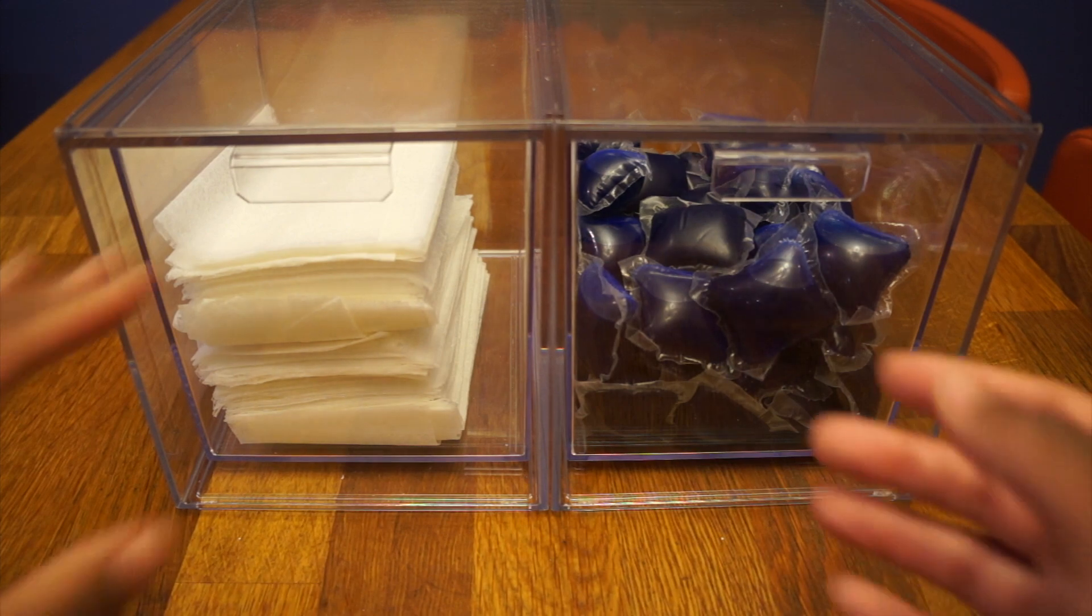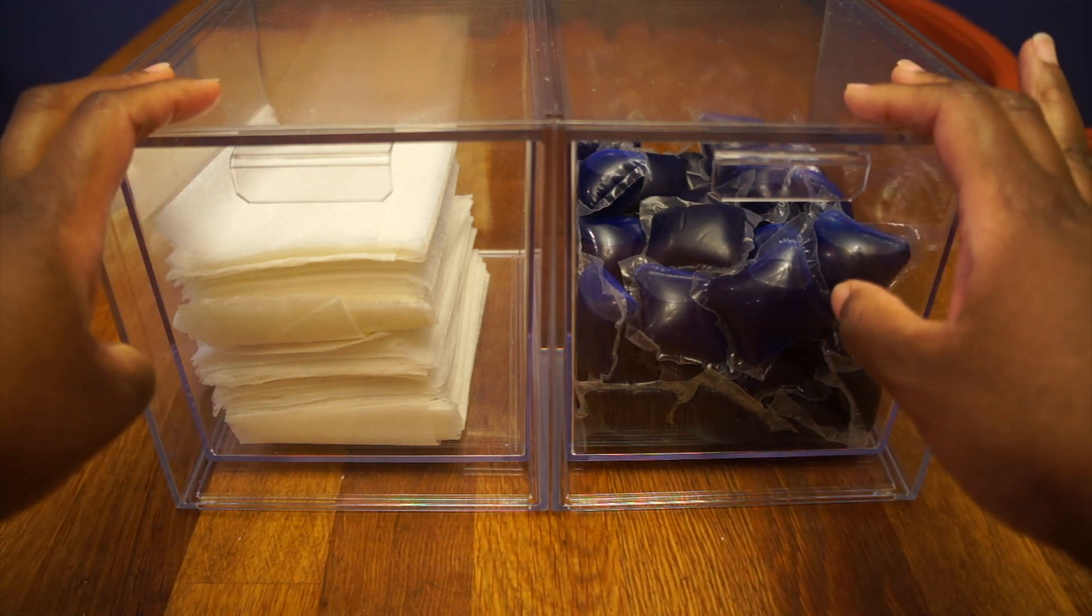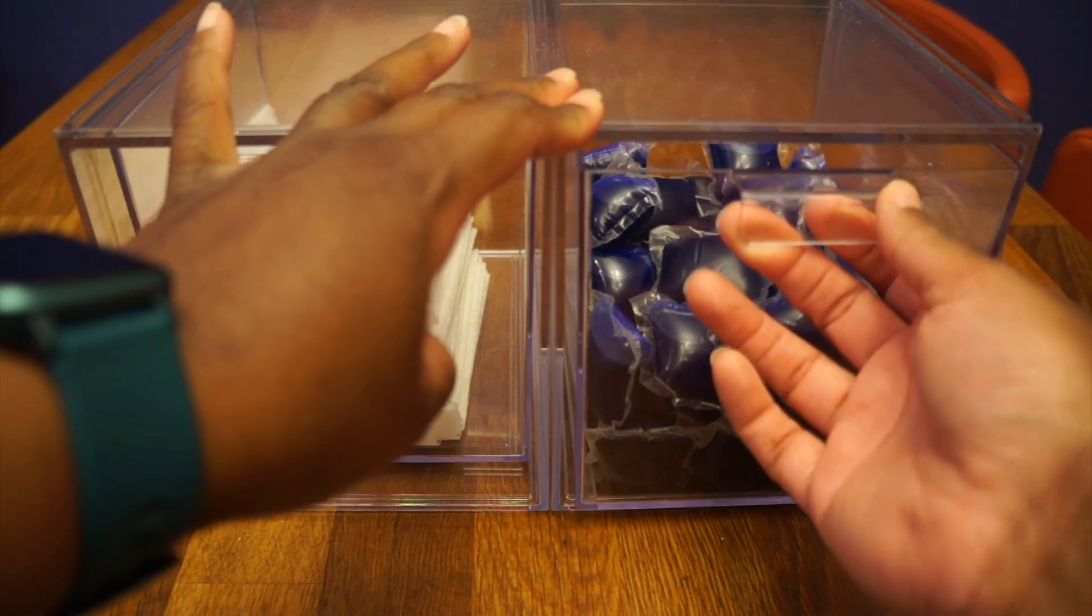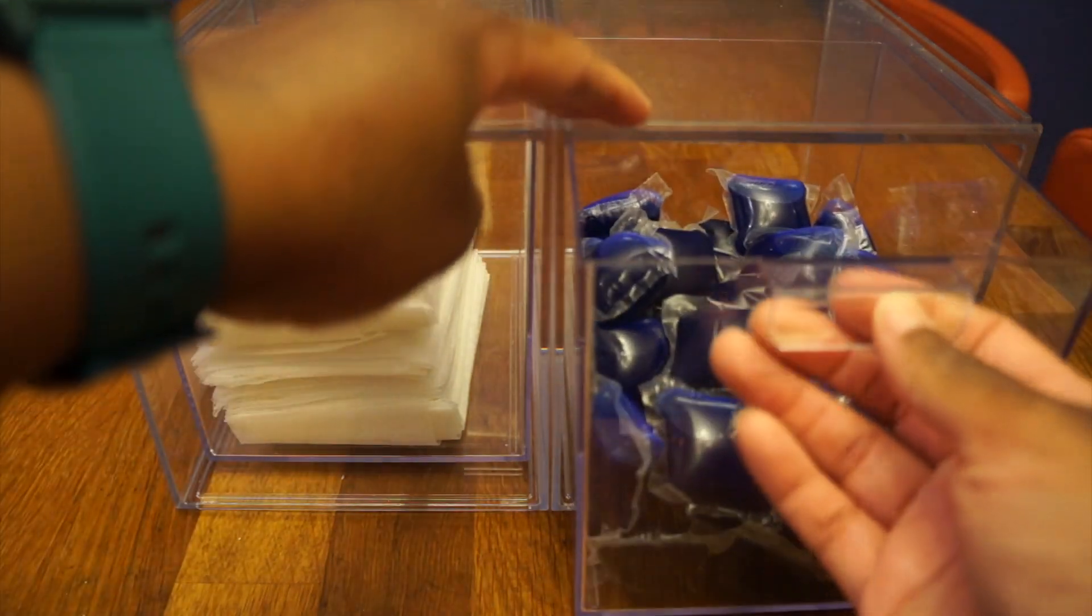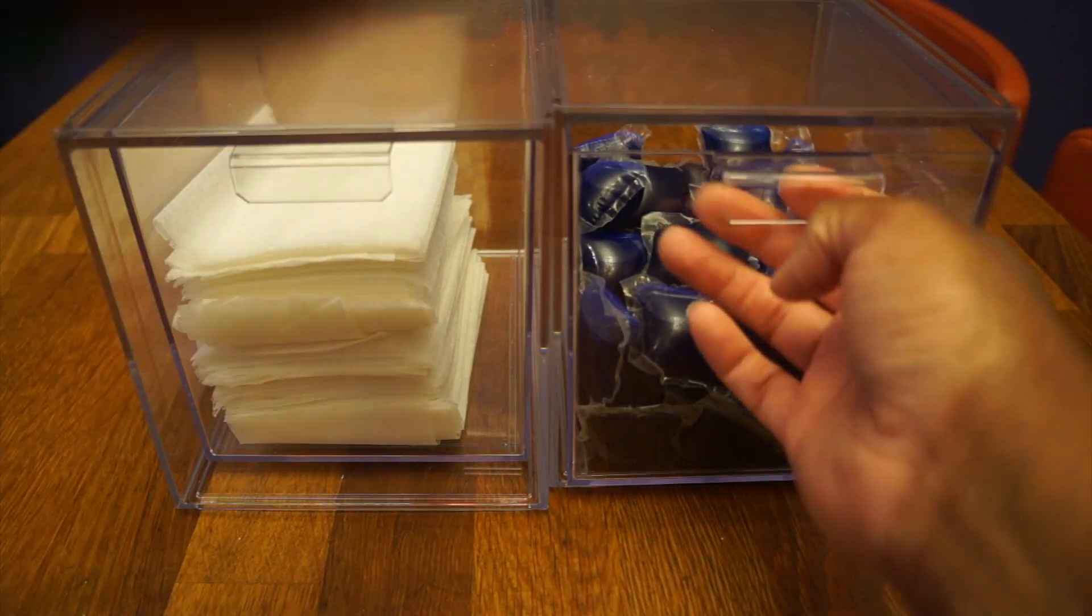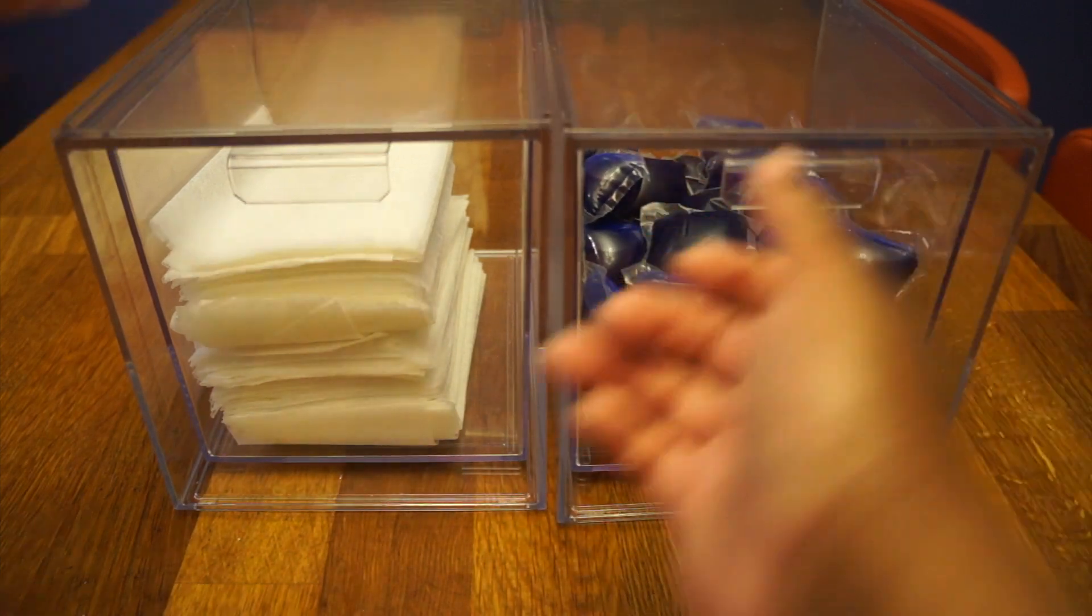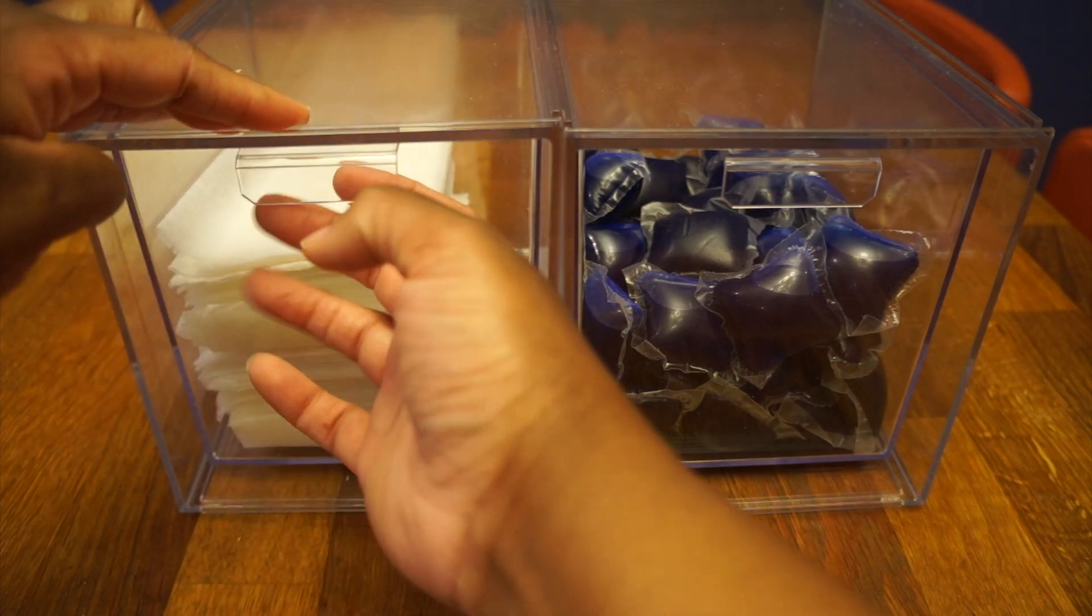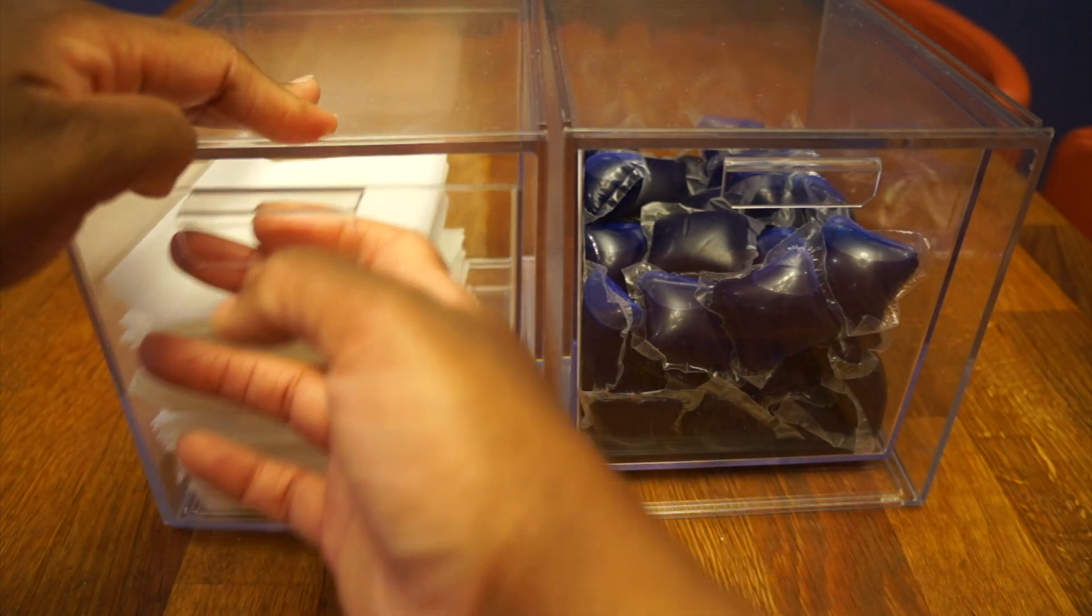So my review on this is that the drawers, it's a flaw. Especially if it's something of weight in these, like these laundry pods, you literally have to hold the top to pull the drawer out. If you don't, see that, it's going to move on you. So you literally have to hold the top to pull it out. So that's one thing I don't like.